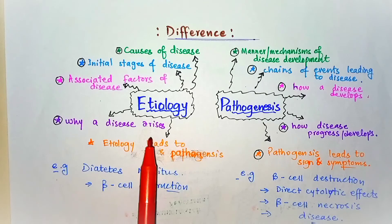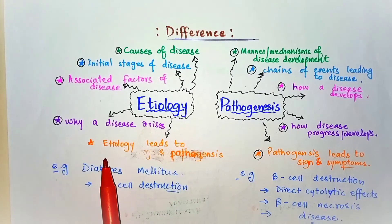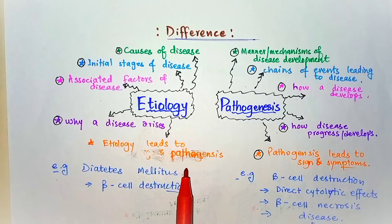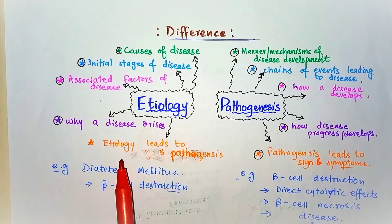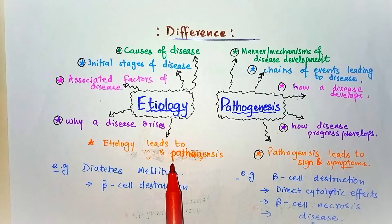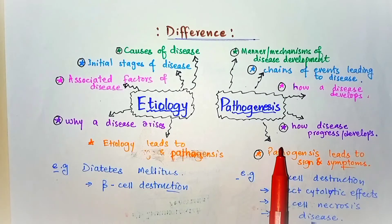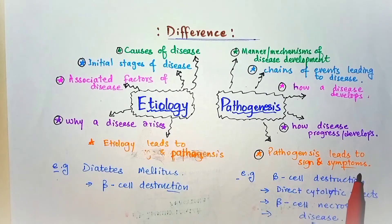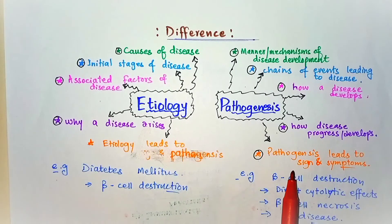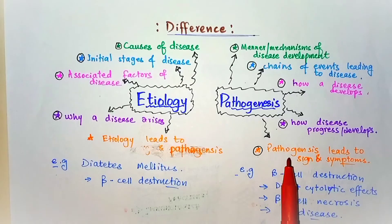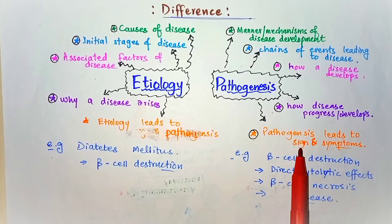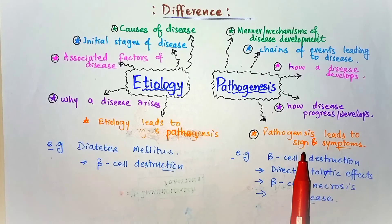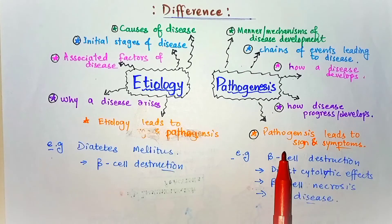Another point of difference is that etiology comes before pathogenesis — etiology leads to pathogenesis. First there is a cause of any abnormality, then there are structural or functional changes at the cellular and molecular level. In pathogenesis, pathogenesis leads to signs and symptoms. When there is a causative agent resulting in structural or functional abnormality, signs and symptoms follow due to those changes.